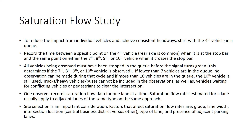All vehicles being observed must have been stopped in that queue before the signal turns green. This determines whether you use the seventh, eighth, ninth, or tenth vehicle. If you have ten vehicles, use the tenth; if nine, use the ninth; if eight, use the eighth; if seven, use the seventh. If there are fewer than seven vehicles, you can't make the observation because the data will not be stable enough. If there are more than ten vehicles, stop with the tenth — that's just a practical maximum to ensure you can confirm the tenth vehicle was actually stopped.